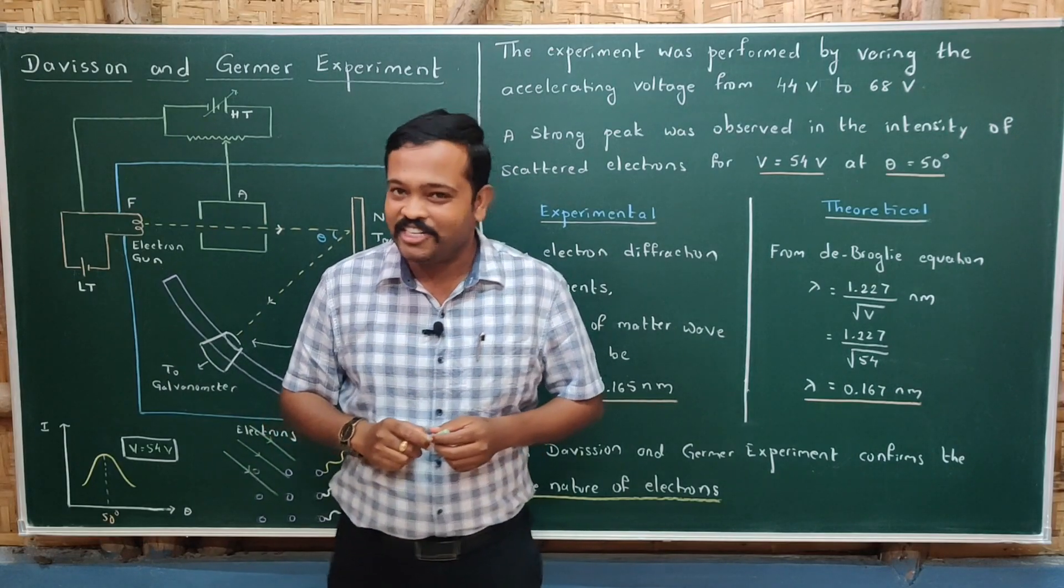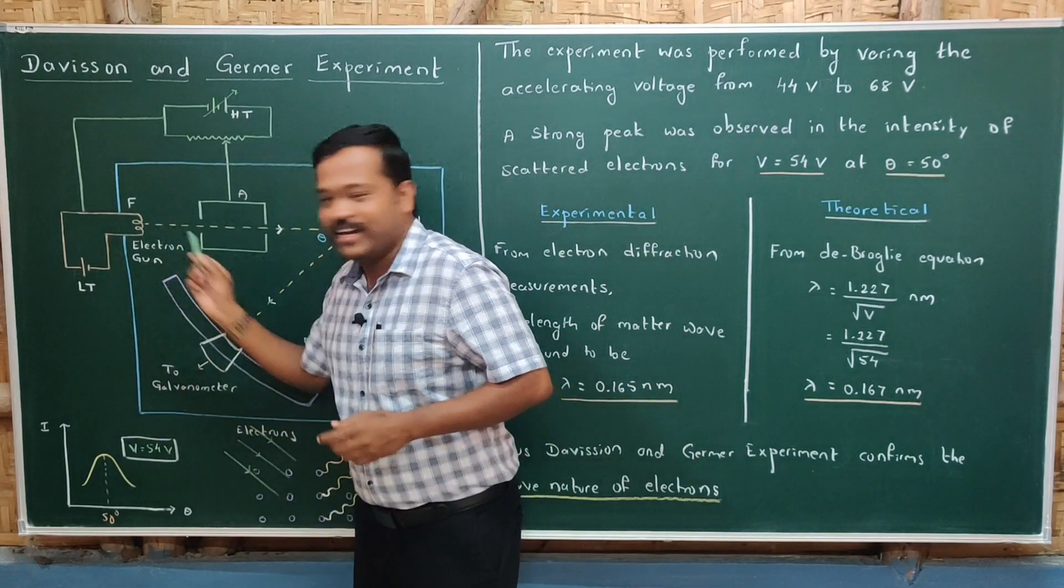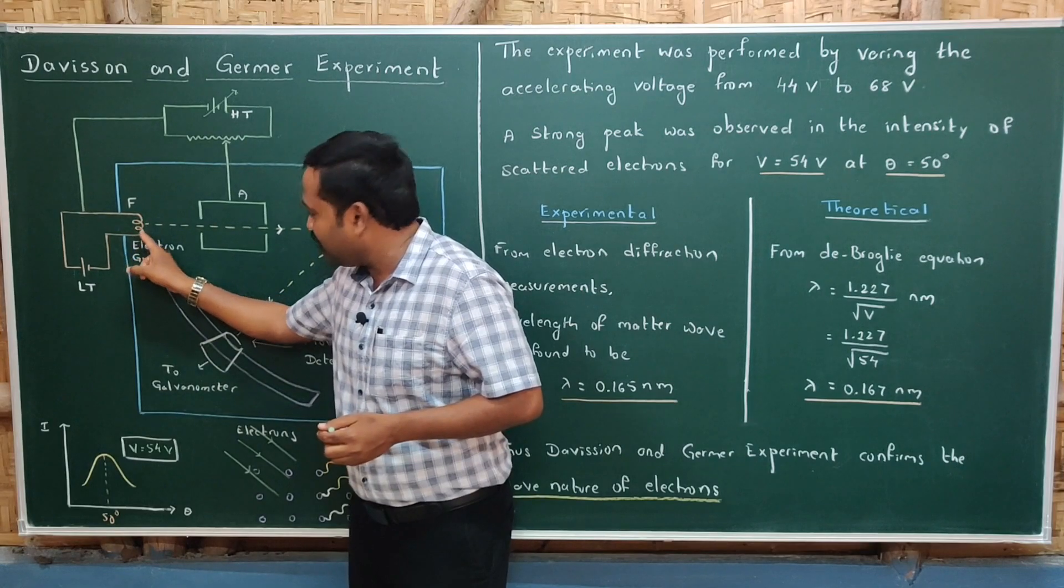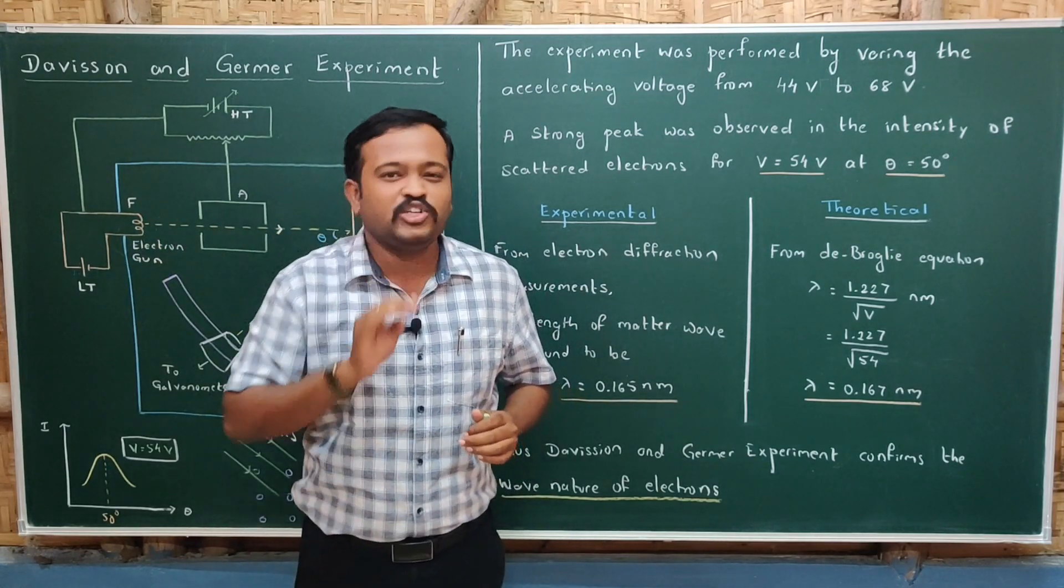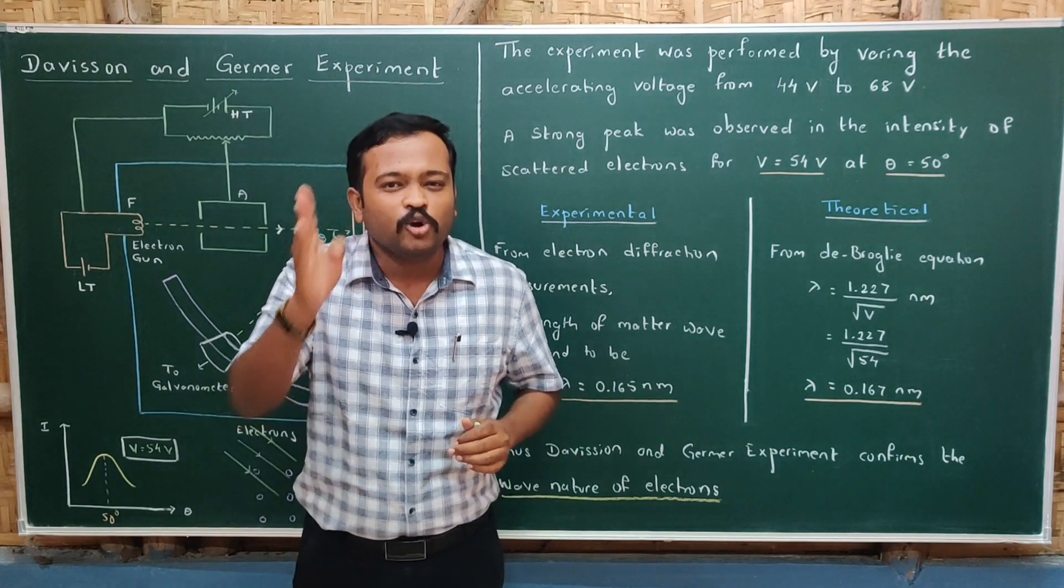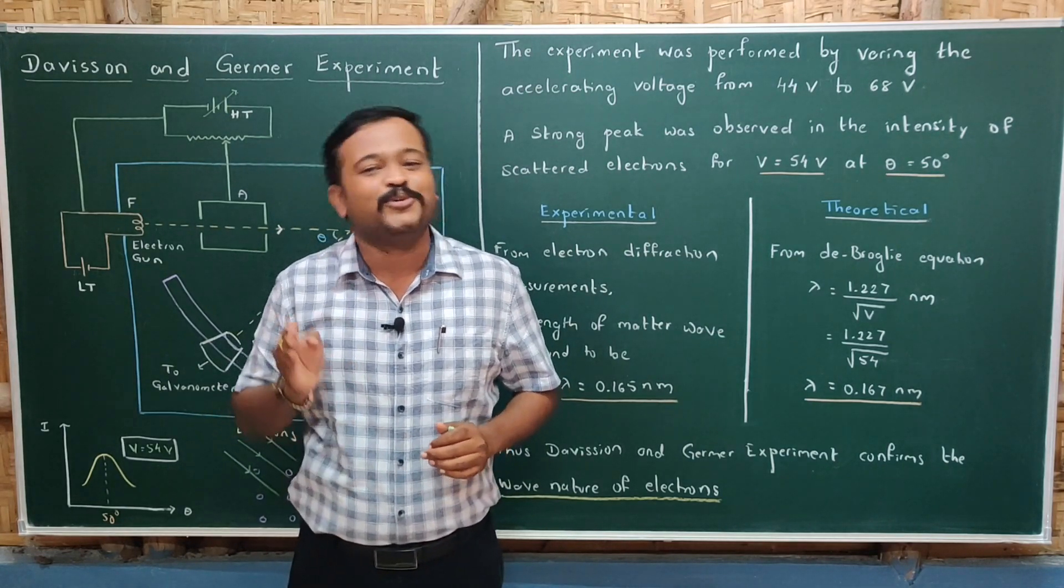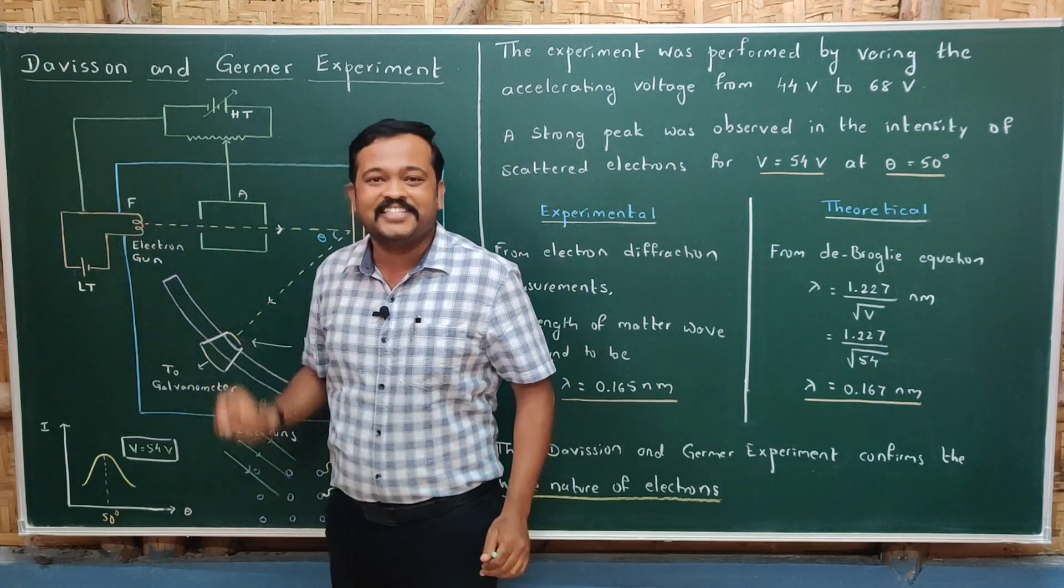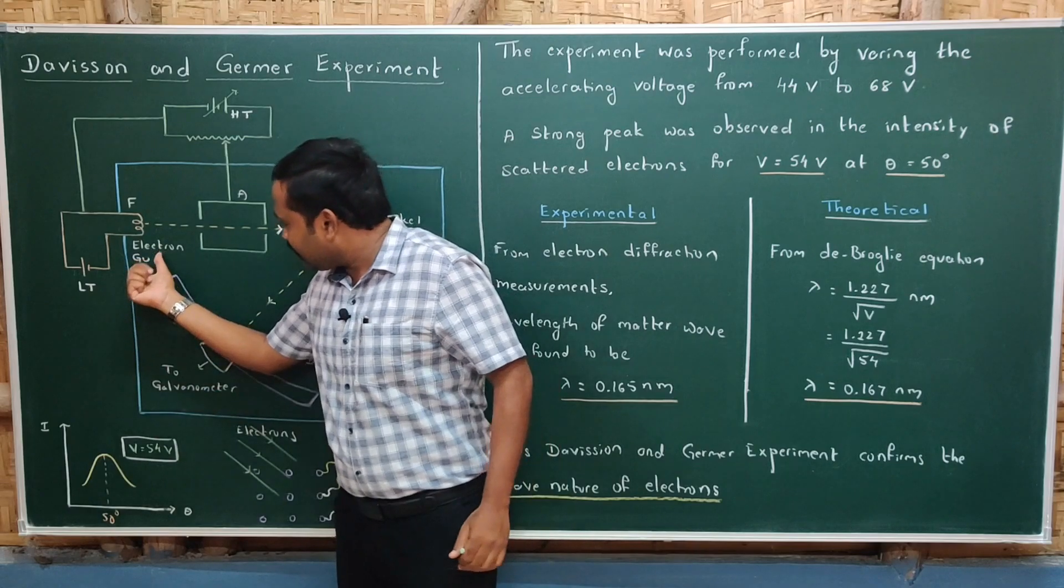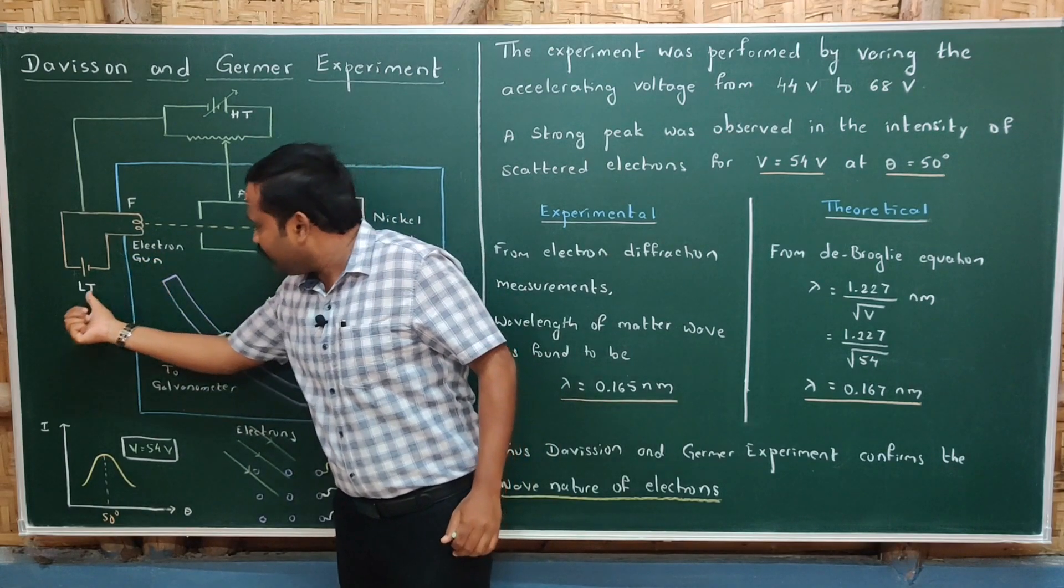The experimental setup consists of an electron gun made up of tungsten filament coated by barium oxide. As the work function of barium oxide is very low, less amount of heat is required to remove the electrons.